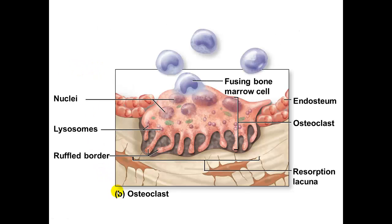Here is a figure showing the osteoclast in the resorption lacunae. You can see the ruffled border of the osteoclast facing the extracellular matrix of the bone, located in the endosteum which is the lining of the medullary cavity. The osteoclast has many lysosomes containing enzymes; between those enzymes and the secretion of hydrochloric acid, the HCl breaks down the inorganic component of bone while the lysosomes break down the organic component.